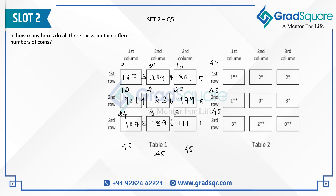The final question asks in how many boxes all three sacks contain different numbers of coins. Checking each box: some have repeating values and some have all different values. In total, five boxes have all three sacks containing different numbers of coins, so the answer is five.